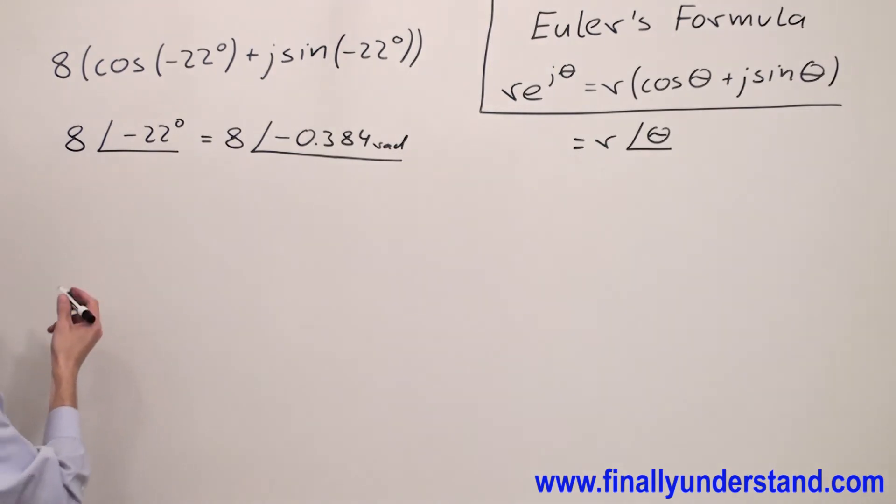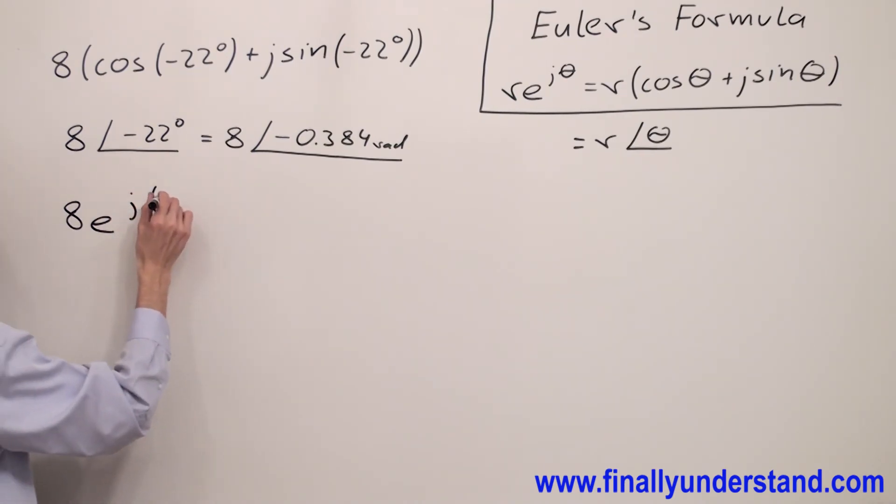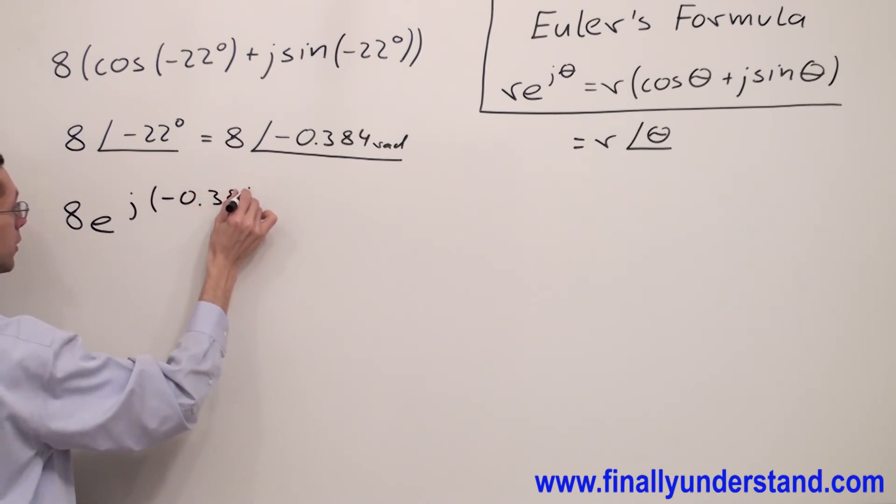Now we have magnitude which is equal to 8 e to the j and angle negative 0.384.